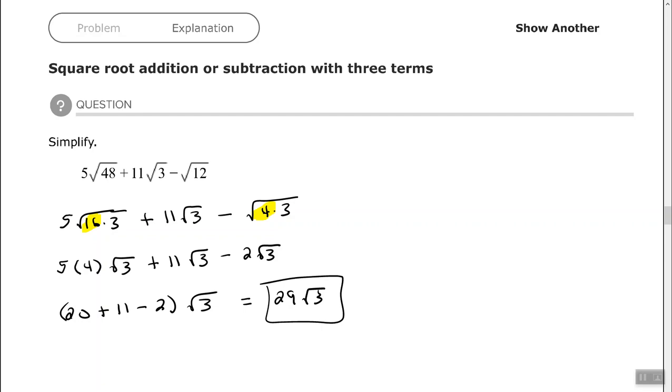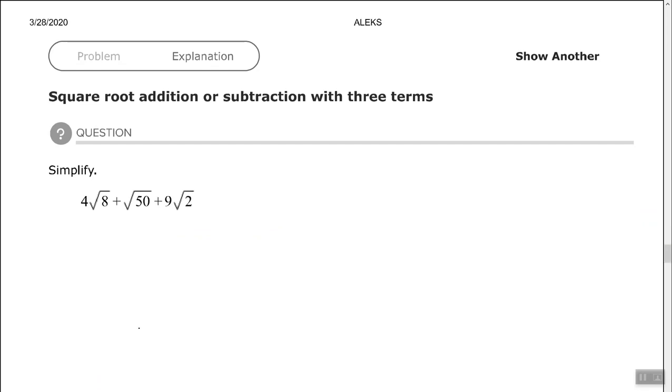Alright, let's try one more of those. If you want to pause it and try to work it yourself, that's fine, and then come back and watch. So here we have 4 times the square root of 8 plus the square root of 50 plus 9 times the square root of 2.